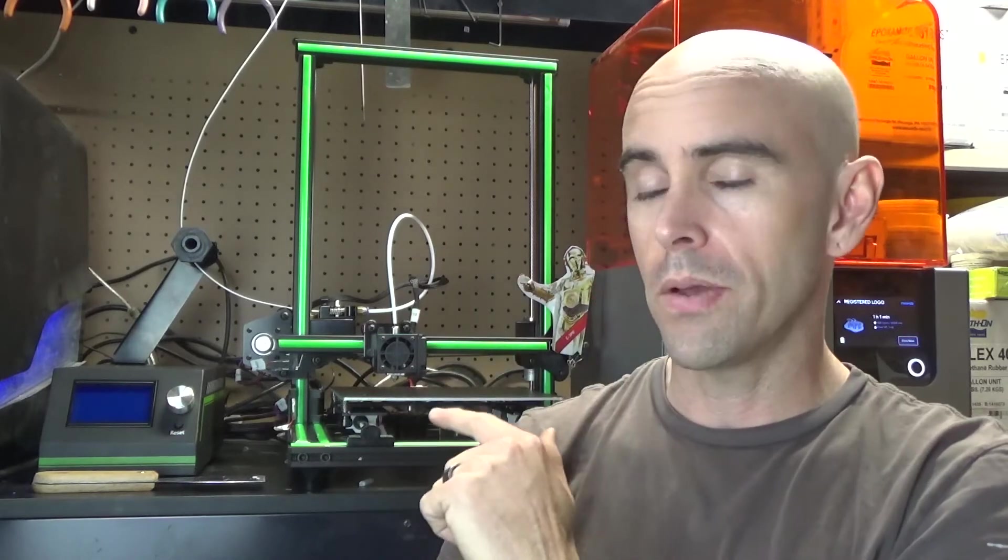Like when I would turn the printer on, whenever the heat bed would turn on, I could hear all of the fans slow down a little bit, like it was drawing too much power. So I went, checked that switch, and sure enough it was on 220. And I switched it down to 110, and now everything is working like it's supposed to.